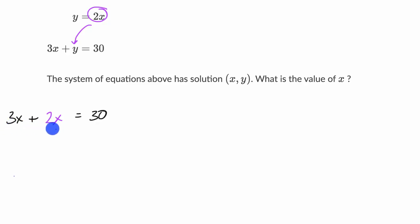And then what's 3x plus 2x? Well, that of course is equal to 5x is equal to 30. I can divide both sides by 5, since that's the coefficient on the x term. And I get x is equal to 6. And I am done.